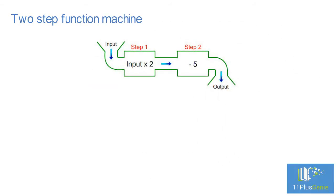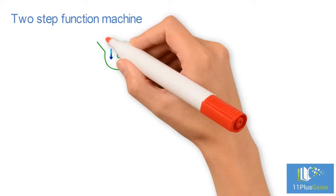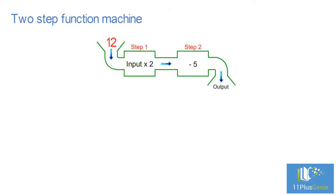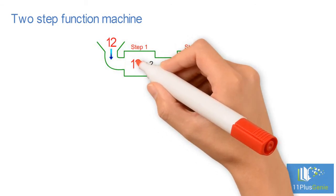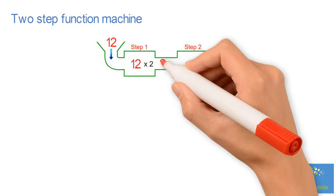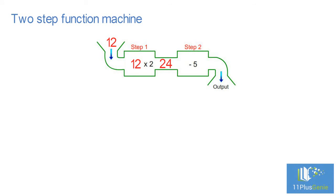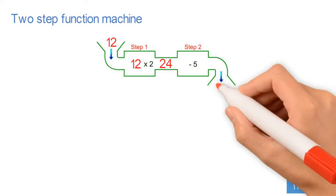A two-step function machine takes a number as input, doubles the number, and then subtracts 5. What will the output be if the input is 12? Remember, if we move through the machine from left to right, we follow the instructions. The machine first doubles the 12, which gives us 24, and then subtracts 5 from the 24, which gives an output of 19.